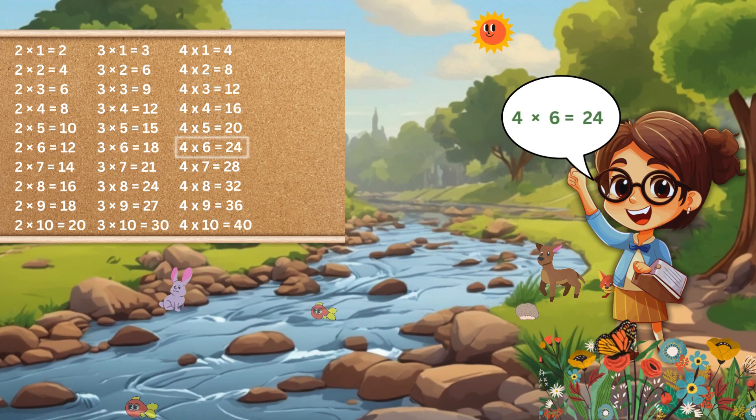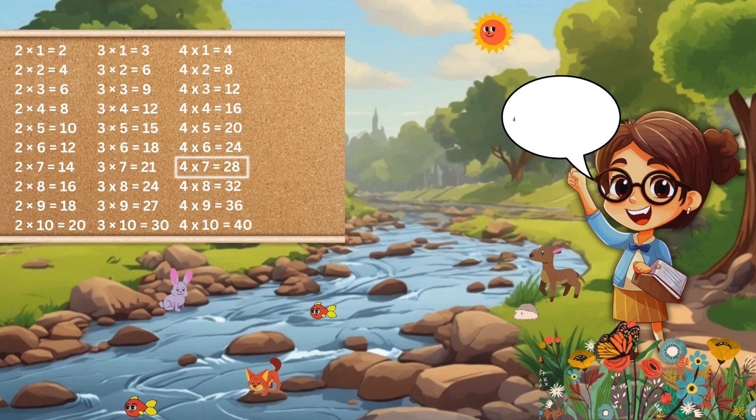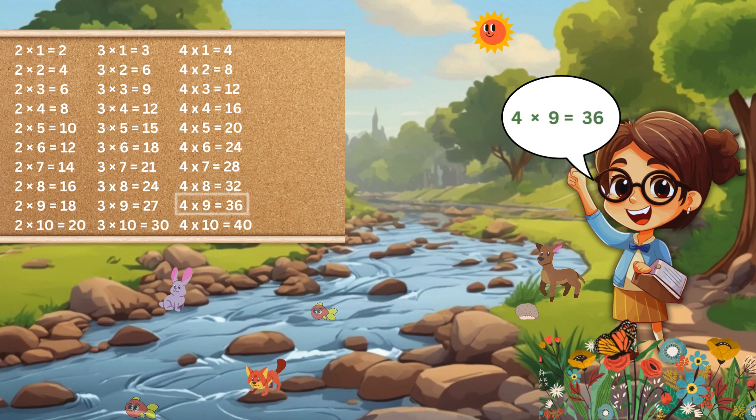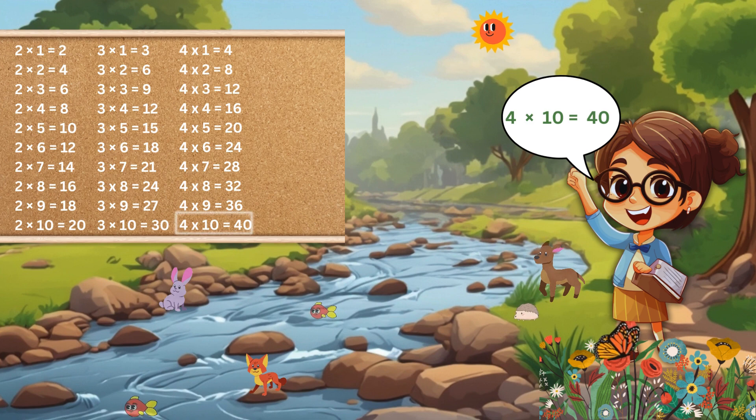4 6s are 24, 4 7s are 28, 4 8s are 32, 4 9s are 36, 4 10s are 40.